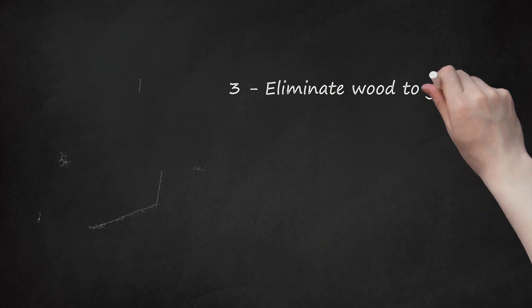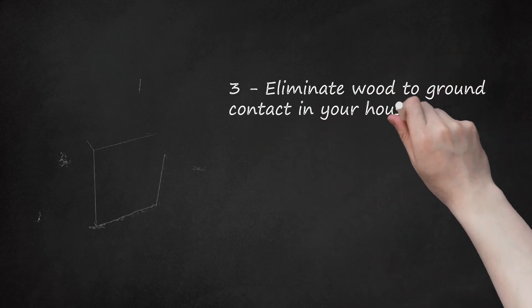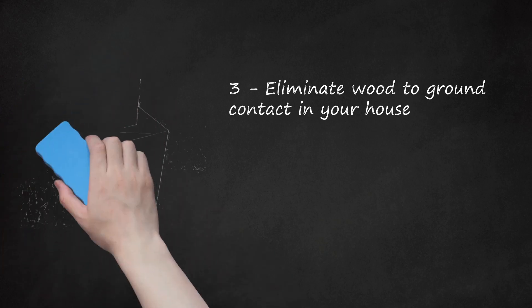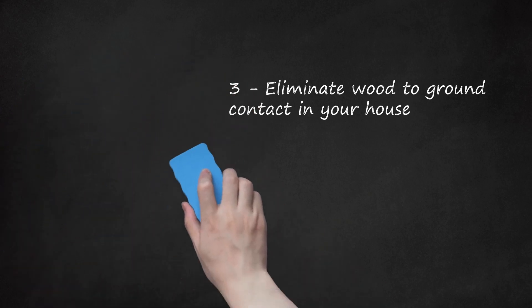Step 3: Eliminate wood-to-ground contact in your house. Termites can enter your house easily if there is wood making contact with the ground. Some examples of this include a wood lattice, wood siding, and door or window frames that make contact with the ground. Anything made of wood should be at least 6 inches above ground level to prevent termites from getting into your house. You may have to put a concrete base on some wooded items on your house. Cutting off the base of wood lattice work that touches the ground will help you keep termites out of your house.